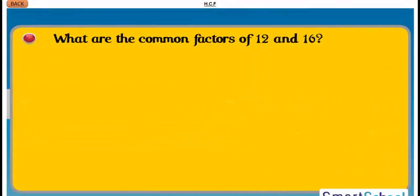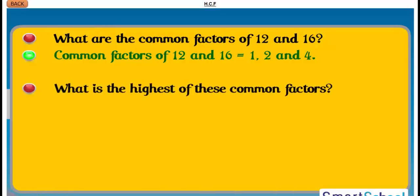Now, we already know about common factors. So, what are the common factors of 12 and 16? They are 1, 2 and 4. What is the highest of these common factors? It is 4. So, we can say 4 is the highest common factor of 12 and 16.